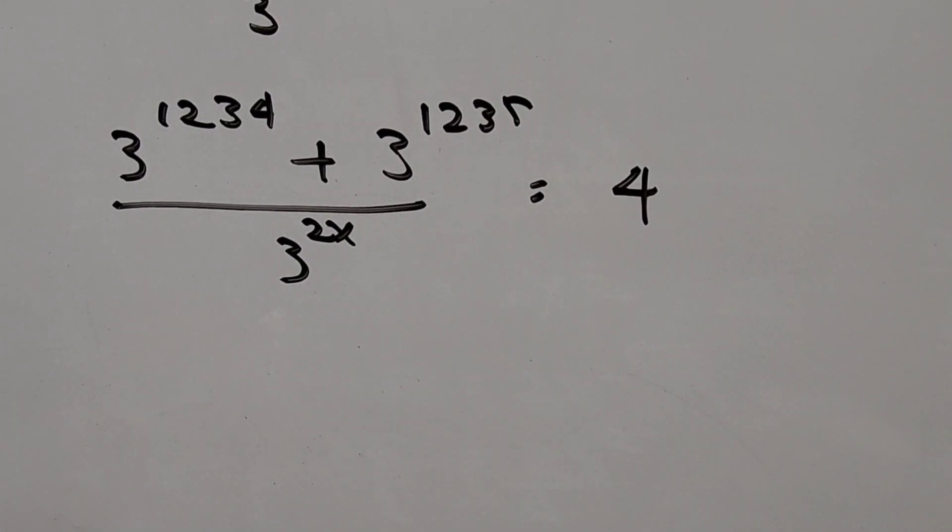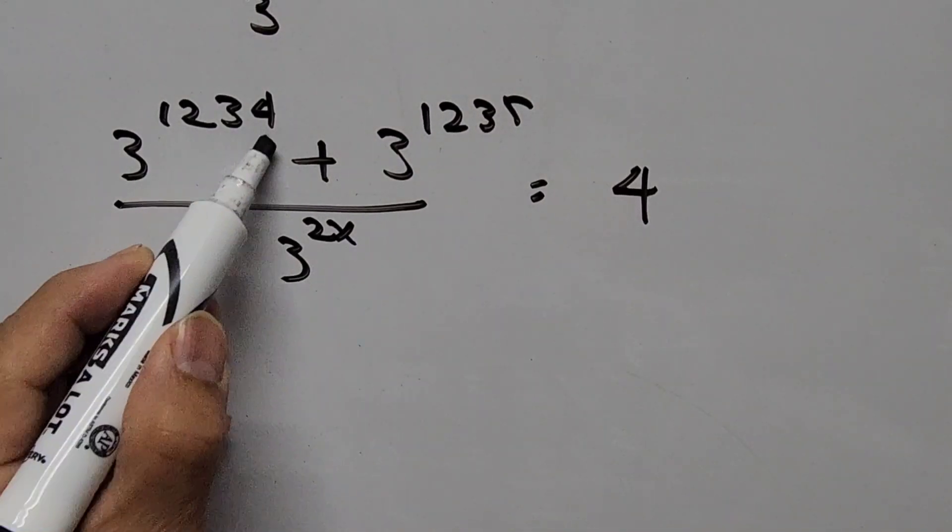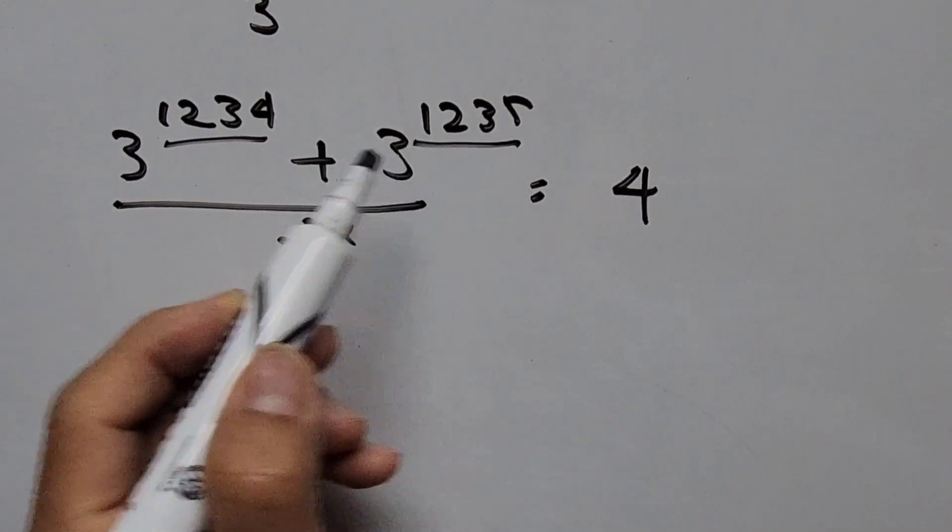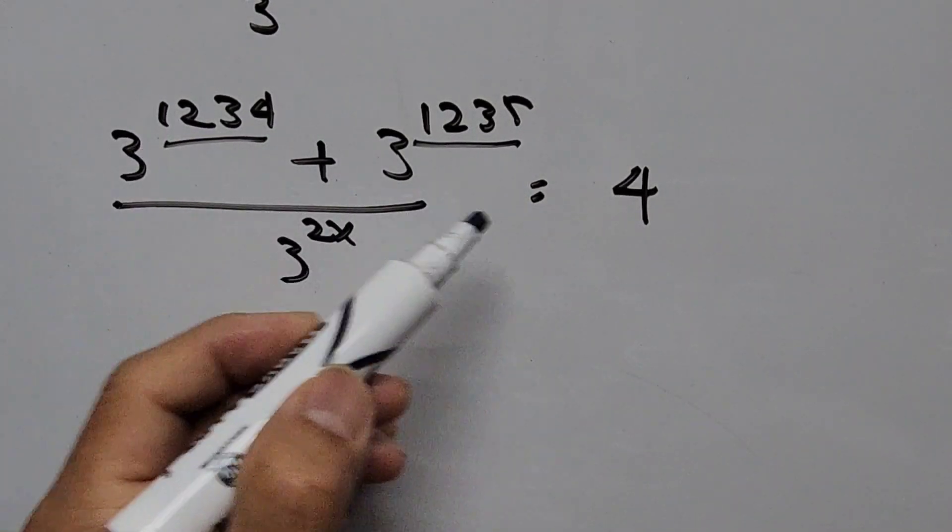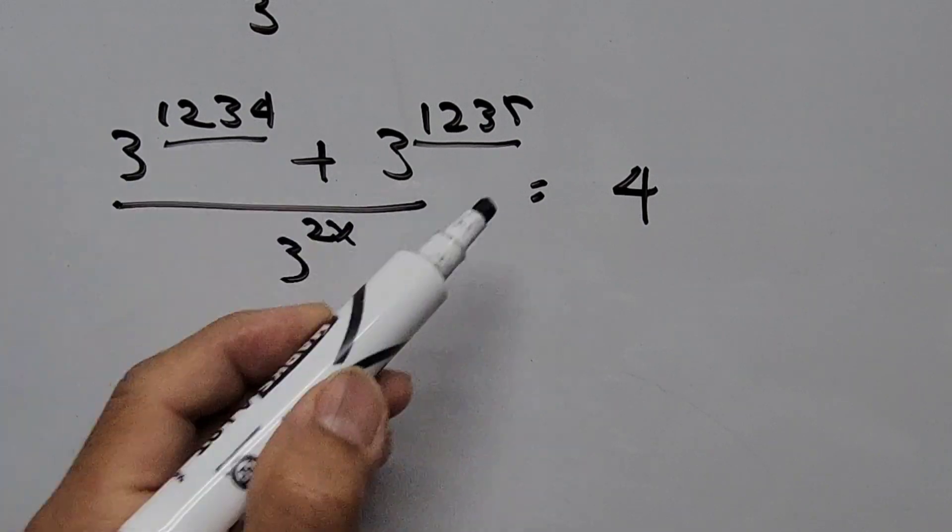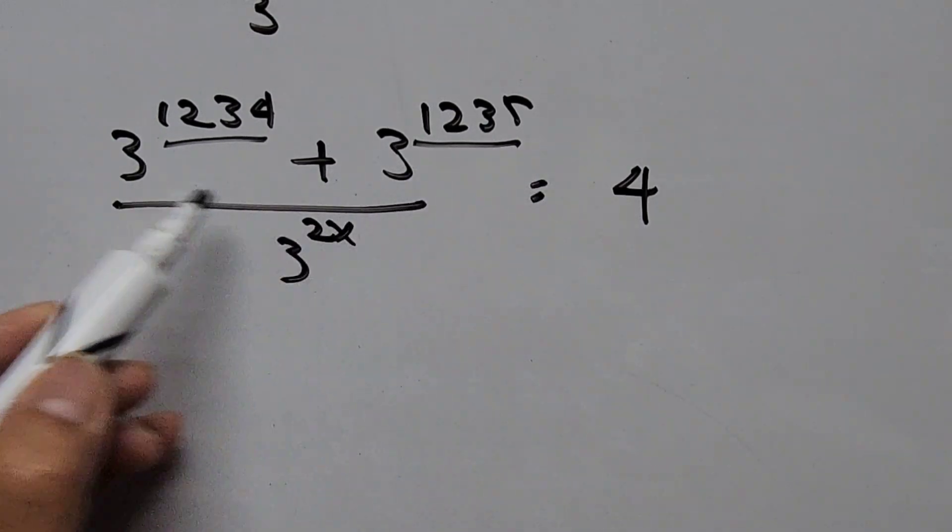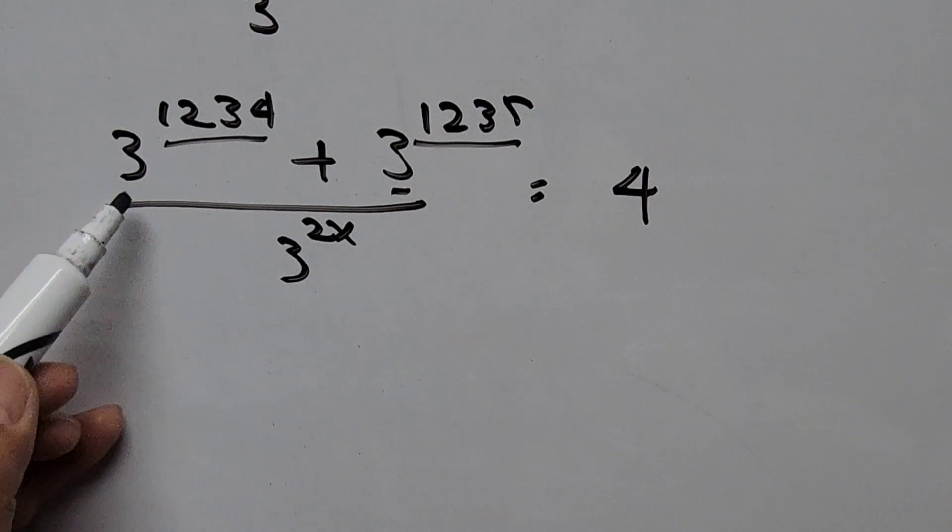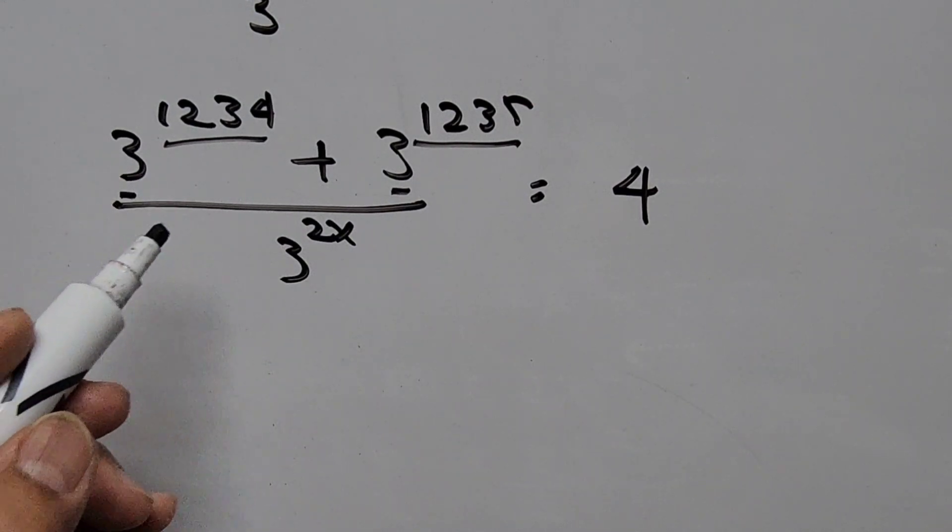So from here if you notice, their exponents are somewhat close to each other or similar to each other - 1234 and 1235. We can factor out 3 to the power of 1234, right?